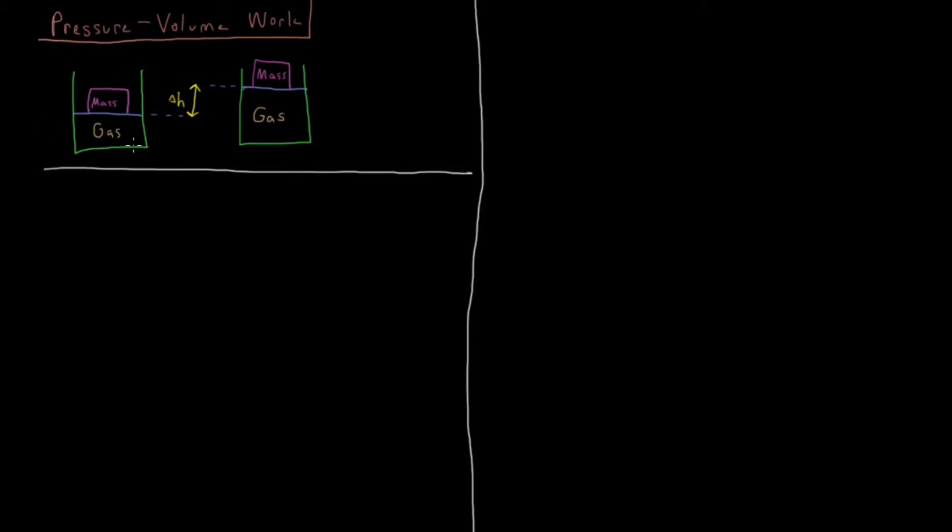So we have some cylinder of gas here and there's some movable piston here that's keeping that gas to some constrained volume. And on top of this there is some mass, some object with some mass M sitting on top of this cylinder of gas here.